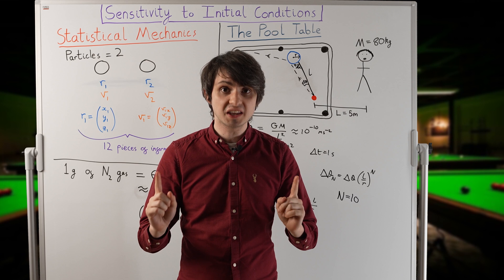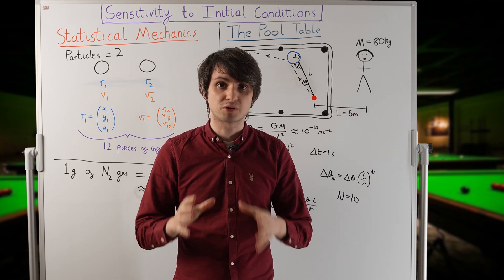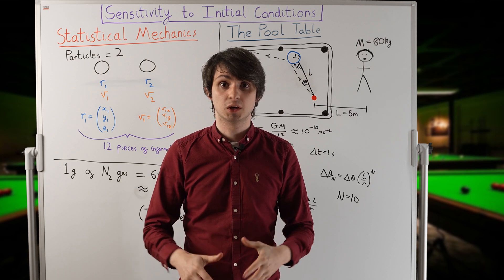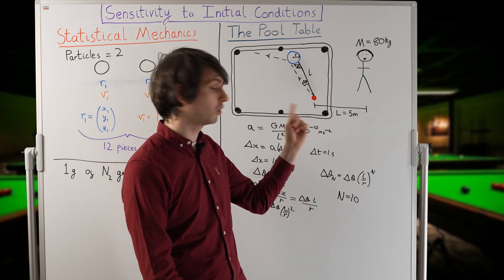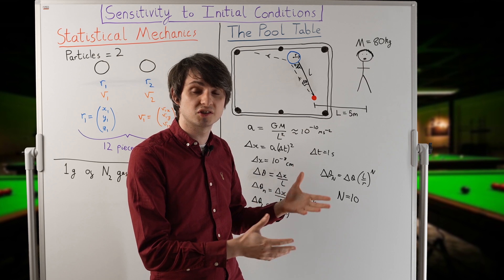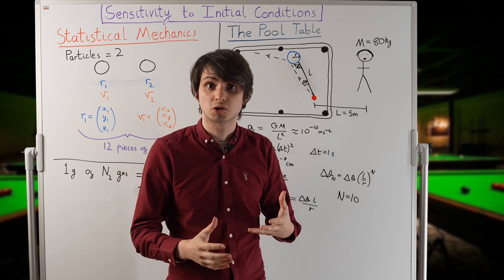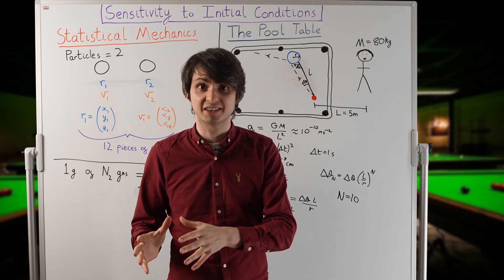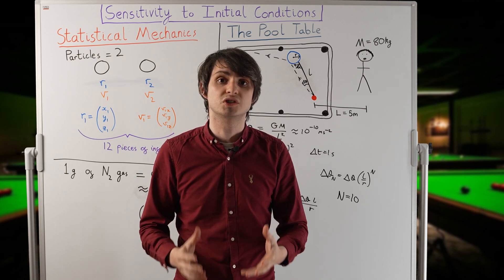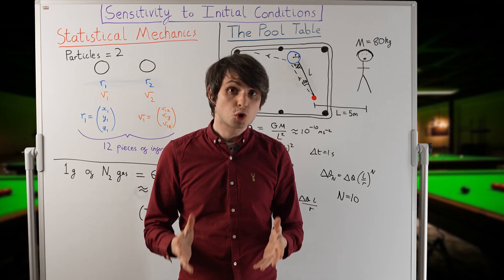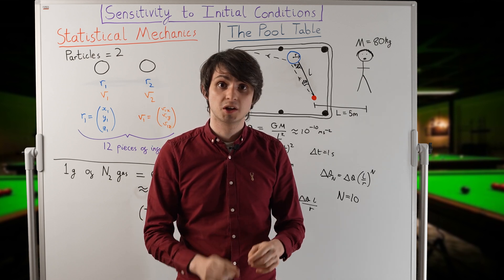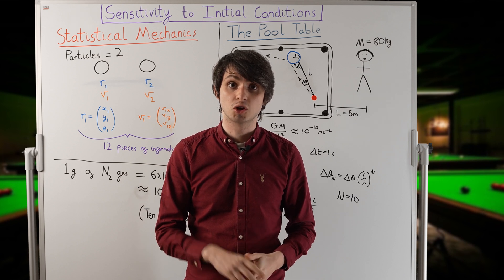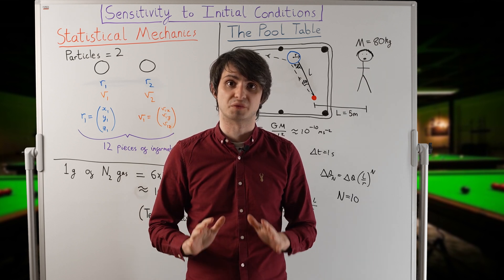This is why we said at the beginning of the video that your mere presence at something like a sporting event could completely change its outcome. A football match, for example, is a lot like our pool table. Applying this calculation to that scenario, we could say that after around 10 kicks of the football, your gravitational pull from the stands may have completely altered the course of the game. Of course, you'll never know exactly how you affect the match, but you should never underestimate just how much influence you can have. Your mere presence can completely change the world around you.